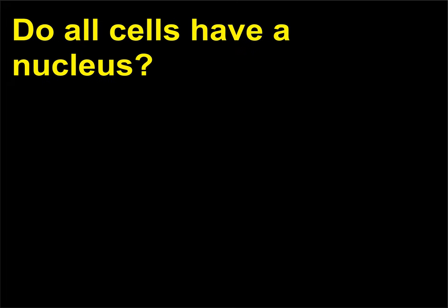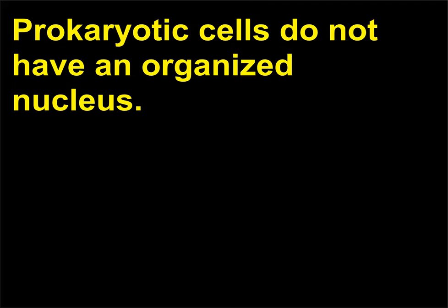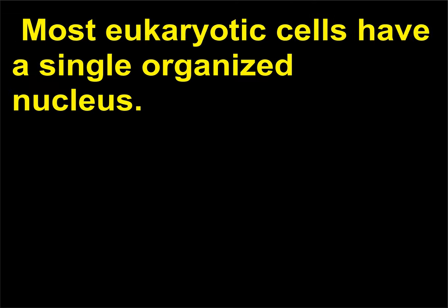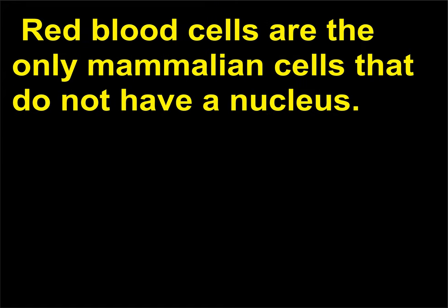Do all cells have a nucleus? Prokaryotic cells do not have an organized nucleus. Most eukaryotic cells have a single organized nucleus. Red blood cells are the only mammalian cells that do not have a nucleus.